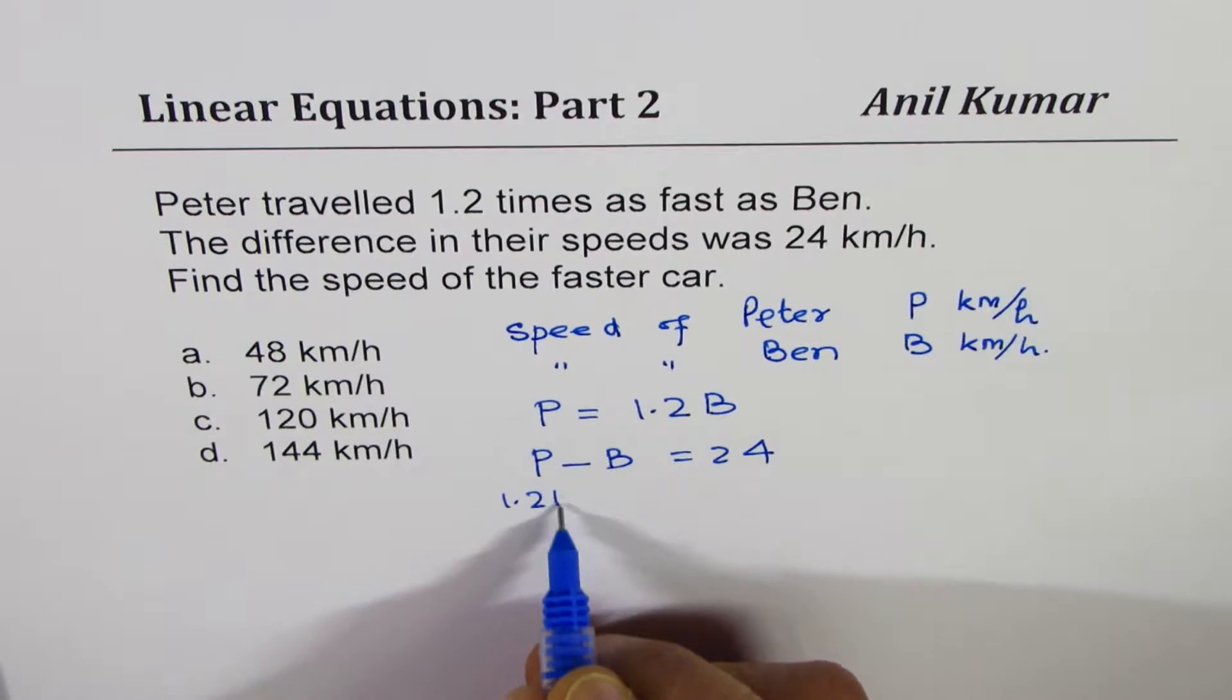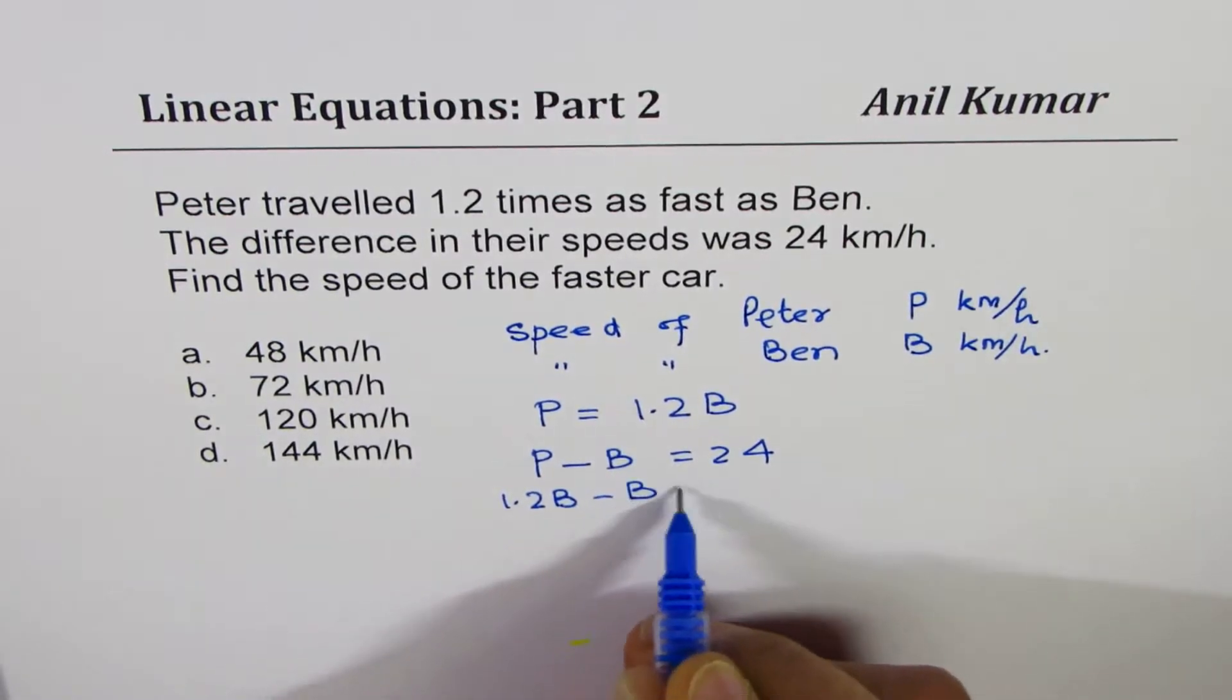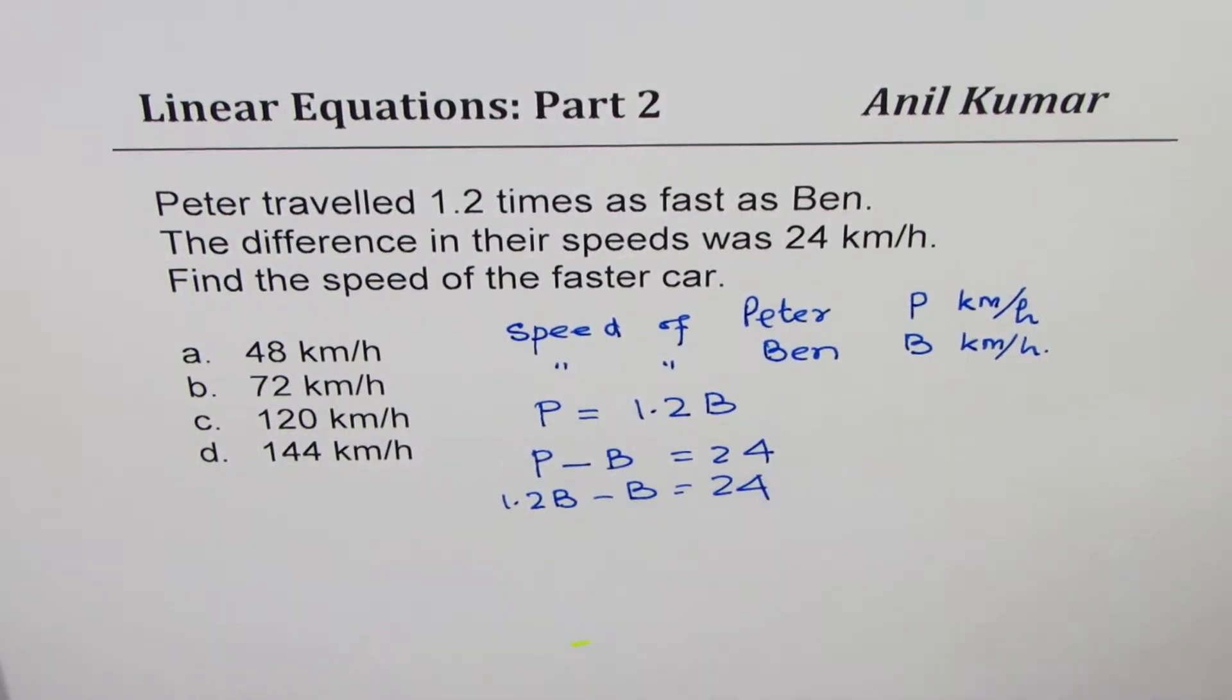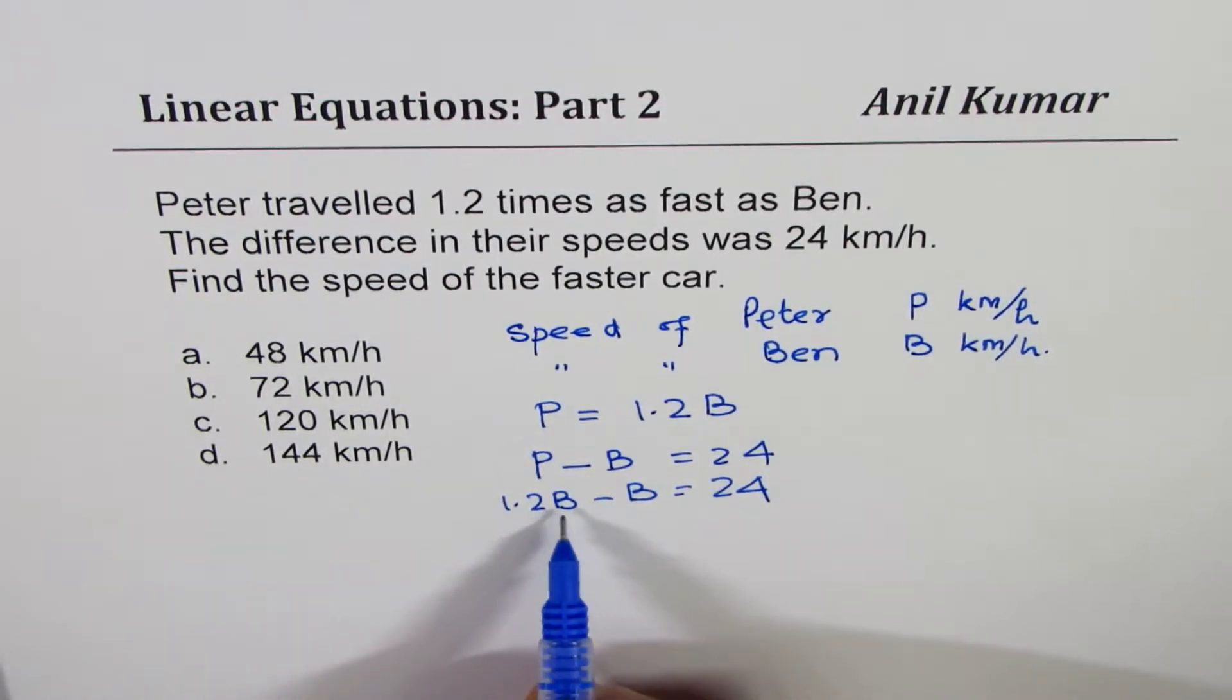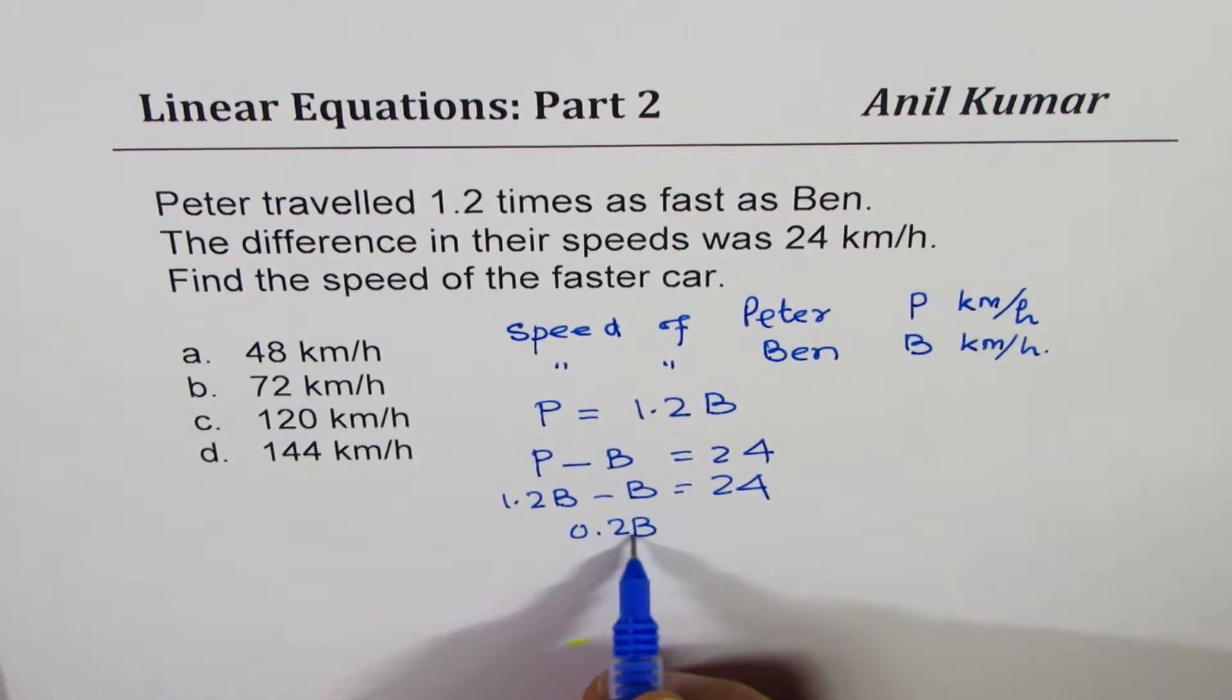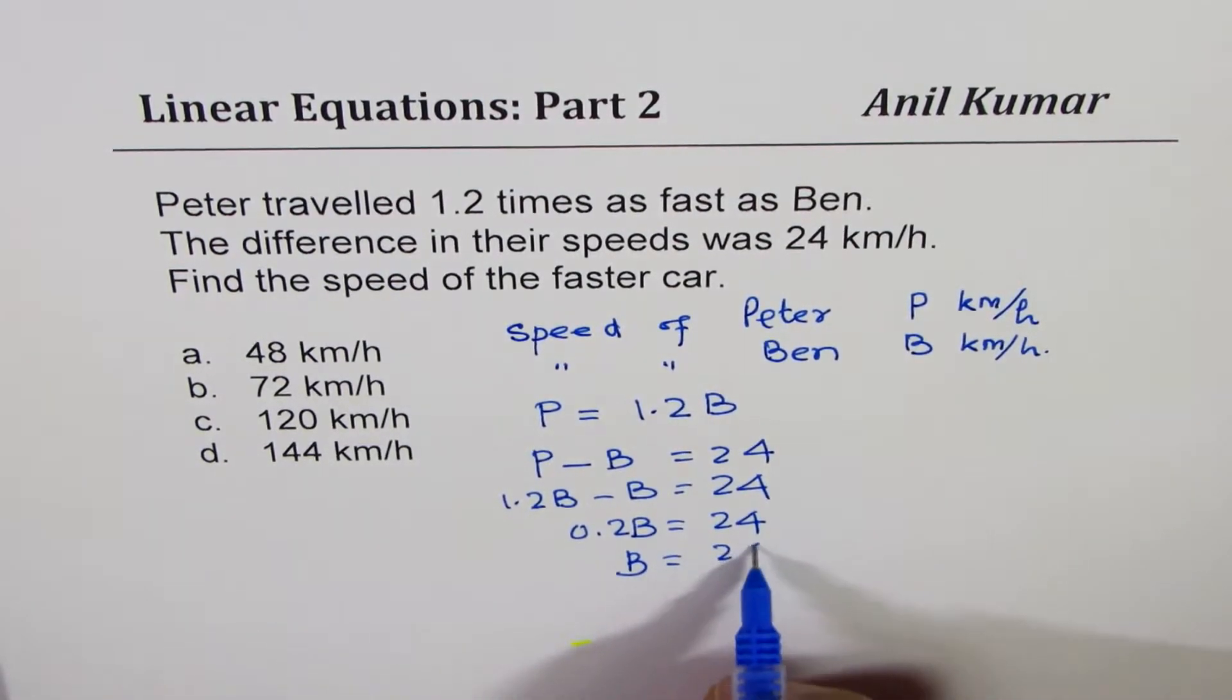Now, Peter is 1.2b minus b equals 24. So that is how you can get a linear relation. 1.2b minus b is 0.2b. That is 24. So b is 24 divided by 0.2.